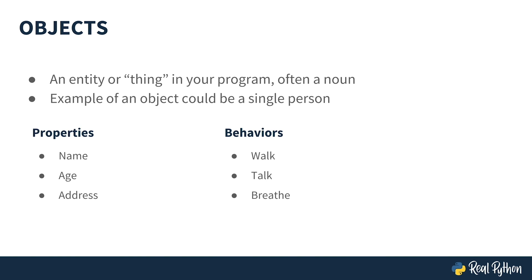It opens the door to creating really cool software. At the heart of OOP is the idea that a program is composed of lots of individual objects. You can think of these objects as entities or things in your program. Oftentimes they are the nouns in your project, such as a person, a house, an email, or any other entity like that. These objects are like little bundles of data that are passed around throughout the life of your program.